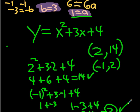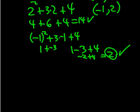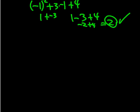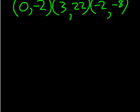So what you're going to do as practice is the following. Those are your three points: (0, -2), (3, 22), and (-2, -8). Give that a shot — hope that was helpful.